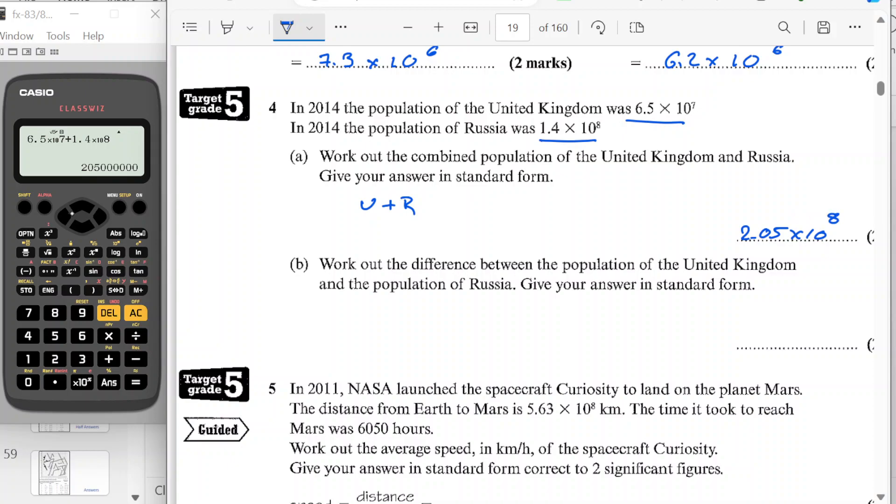So work out the difference between them, so I need to subtract them now. This would be Russia minus the United Kingdom. Because the Russia value is larger. So minus 6.5 times by 10 to the 7. So when I subtract them, I would get 7.5 times by 10 to the 7.